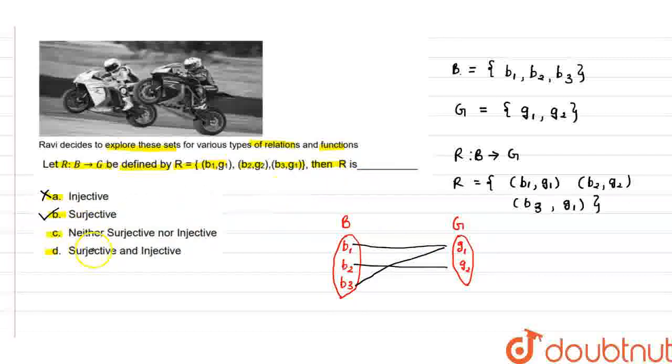So option B is the right option. We check option C: neither surjective nor injective—this is wrong because the given relation is a surjective function. If we check option D, surjective and injective both, this is also wrong because the given relation is only a surjective function. So here, option B is the only right answer. Thank you.